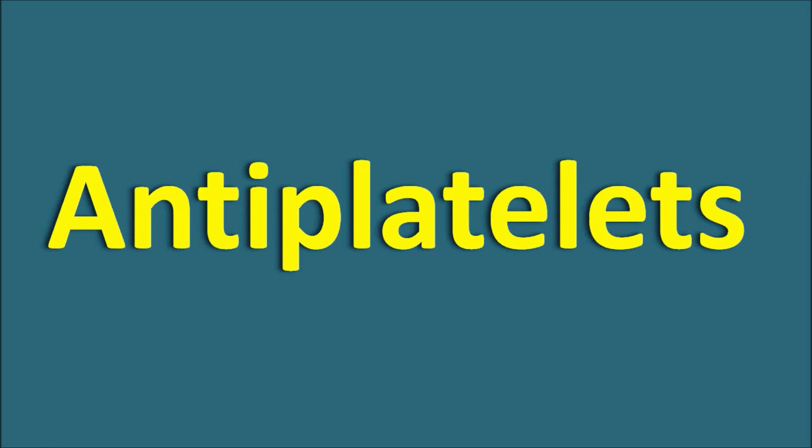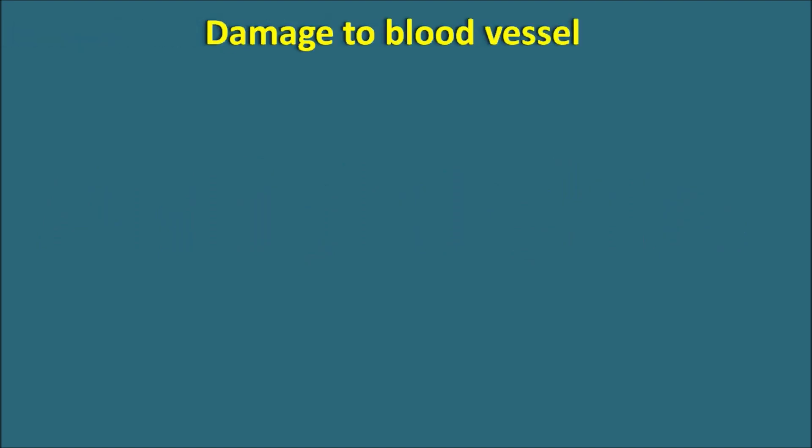Hi everyone. In this video we are going to discuss about the anti-platelets. Whenever there is a damage to the blood vessel, immediately the clotting process is going to be stimulated. So the coagulation cascade is stimulated on one side and platelets are activated to produce platelet aggregation. Both the coagulation cascade and platelet activation and aggregation produce a clot which can produce hemostasis.